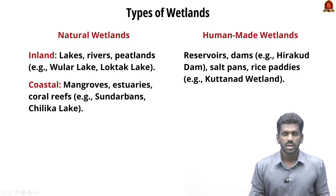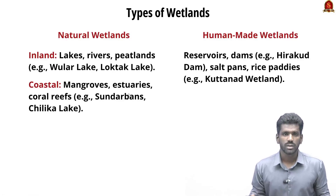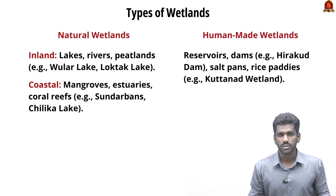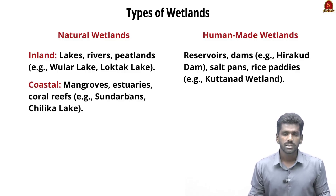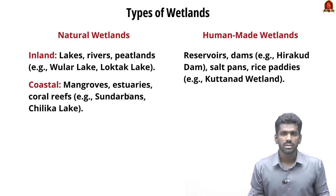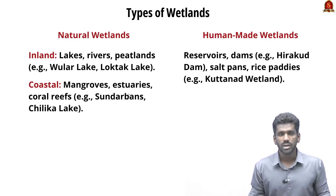There are two types of wetlands: natural wetlands and human-made wetlands. In natural wetlands, there are two subdivisions — inland wetlands and coastal wetlands. Lakes, rivers, floodplains, peatlands and marshes come under inland wetlands. For example, Wular Lake and Loktak Lake are inland wetlands.